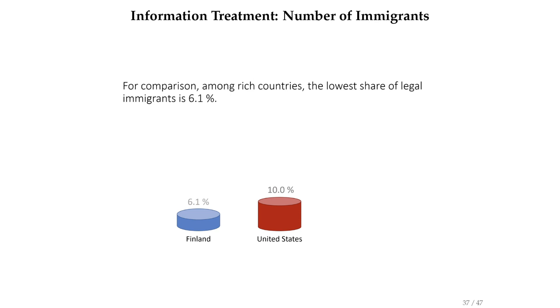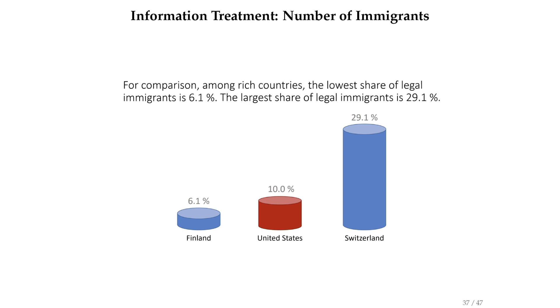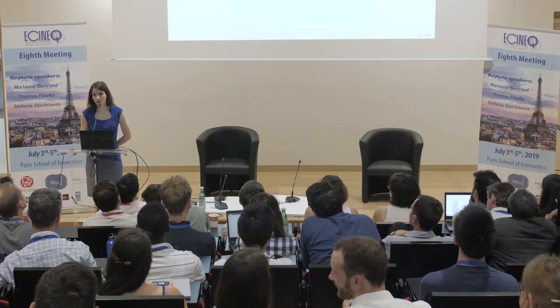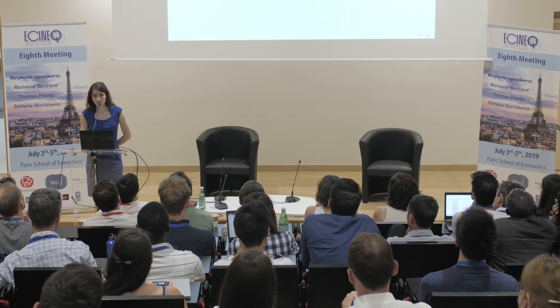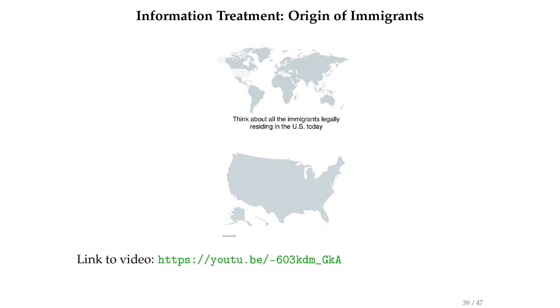We also have a version for total immigrants — in case people say there are a lot of illegal immigrants — so another version says 13.5% are immigrants overall. For benchmarking, because people may say my country gets many more immigrants than everyone else, we say: among rich countries, the lowest share of legal immigrants is 6.1% (Finland) and the highest is 29.1% (Switzerland). So all countries are bracketed between these — well in the middle. The message is not just how many immigrants are there, but am I normal relative to other countries.